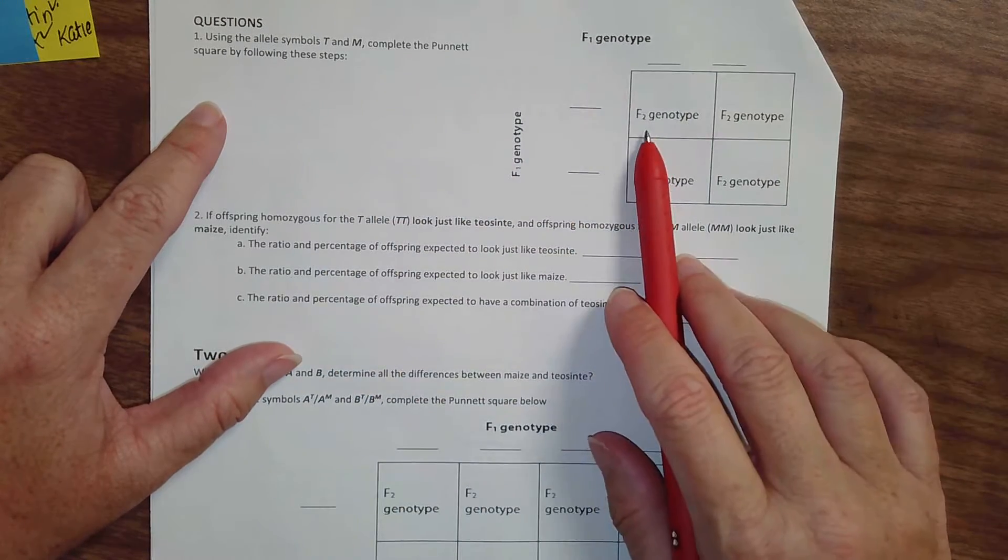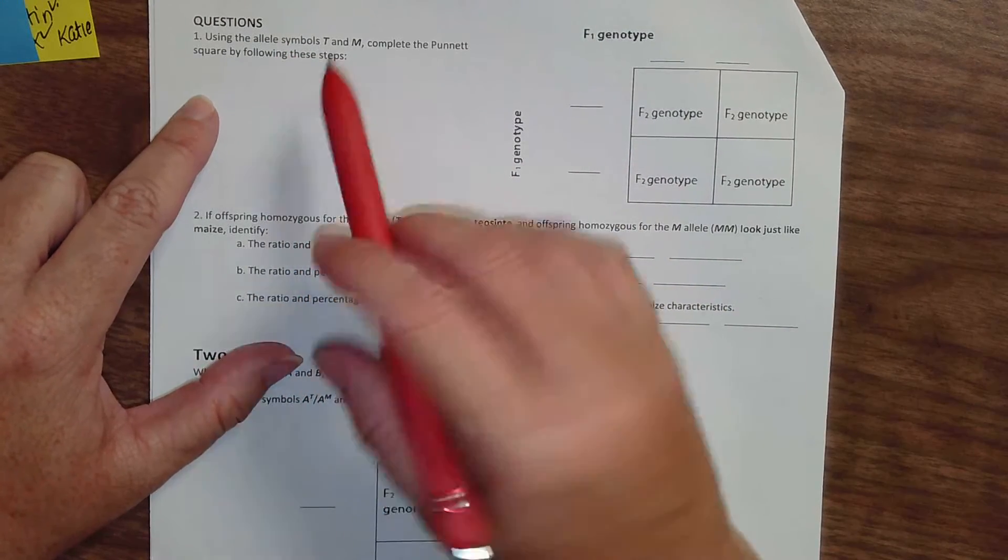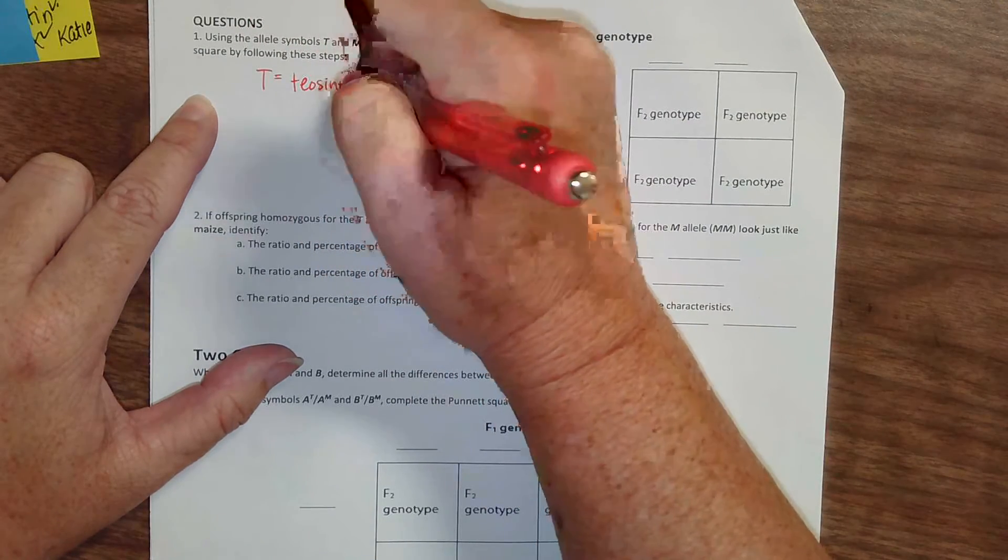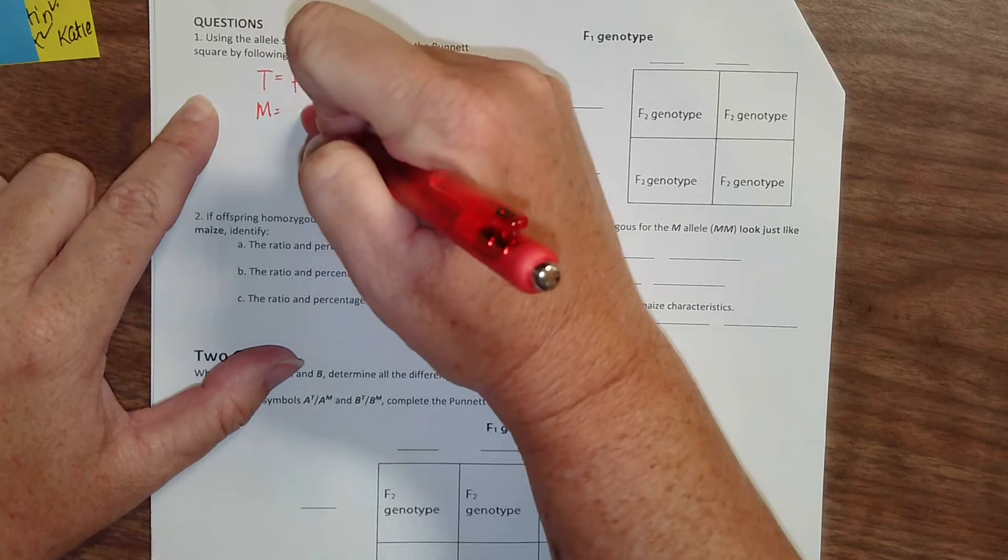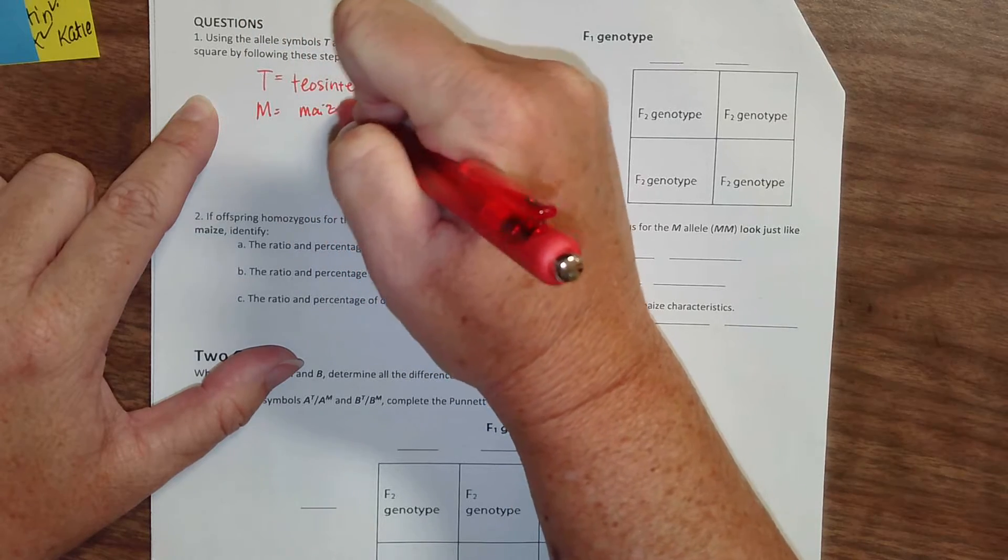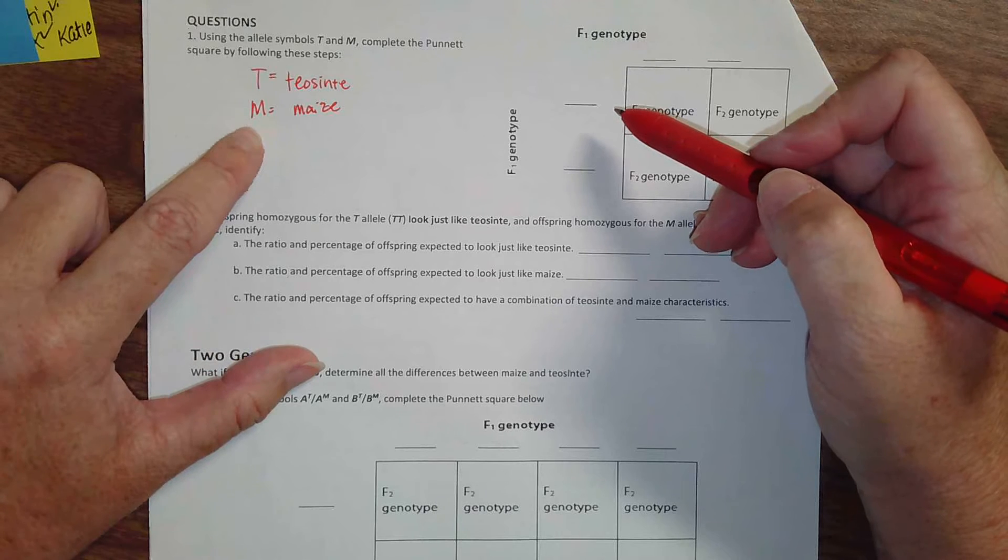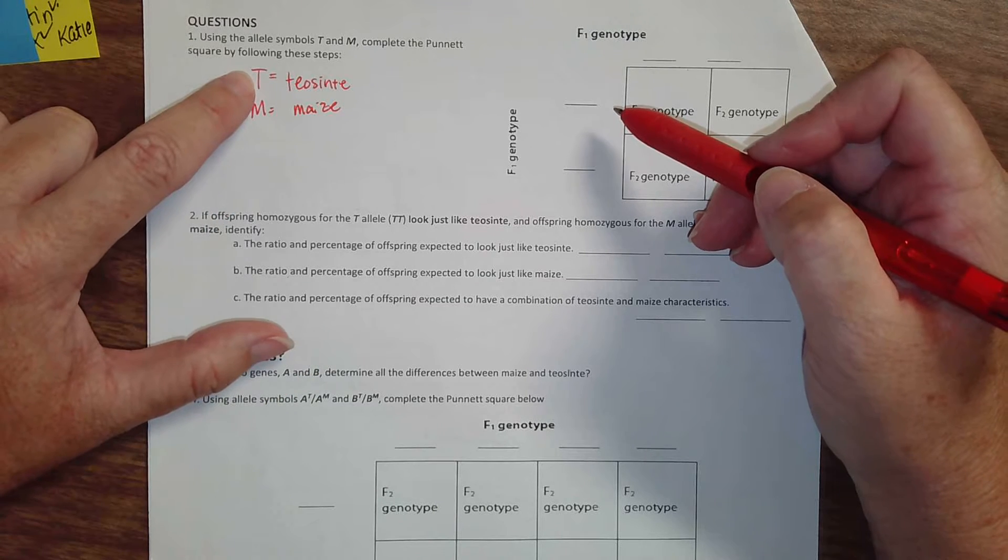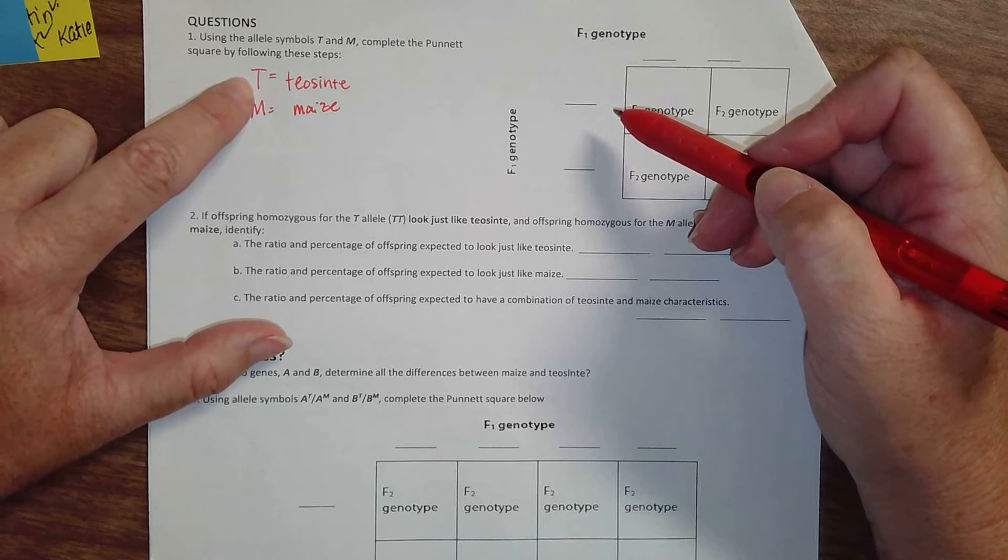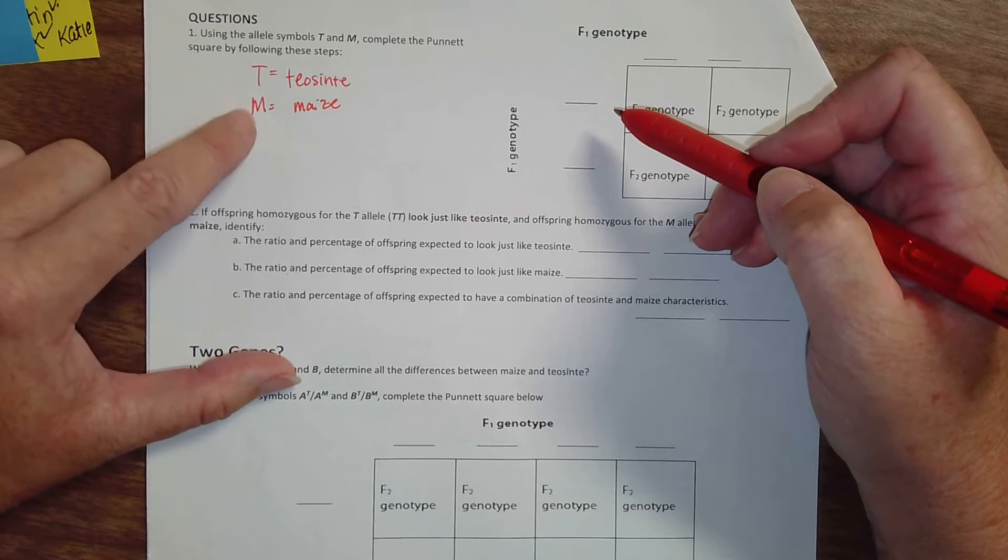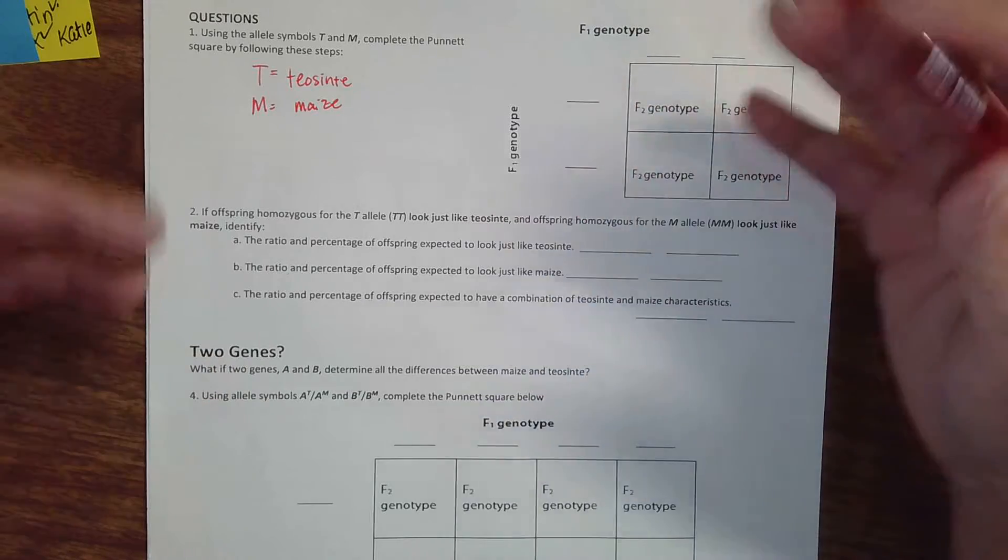For the first one, it's said to use T and M. T for Teosinte, M for maize. The only way that the corn looks like maize is if it has two M's for the alleles. The only way it looks like Teosinte is if it has two T's. If it is a mix or heterozygous, then it looks like some kind of a hybrid.